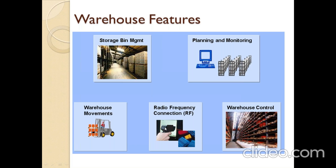If you implement an RF device, there are some disadvantages: you must install the radio frequency tower, integrate it with the system, train users, keep RF devices charged, and do regular software updates. If an RF device falls from a forklift, it's gone — minimum cost is 70,000 to 80,000 Indian rupees. Some companies use sophisticated RF devices costing up to two to three lakh rupees.